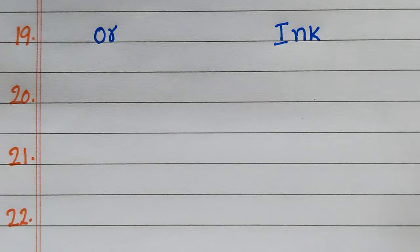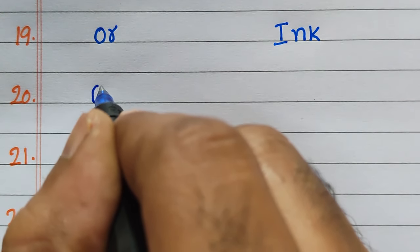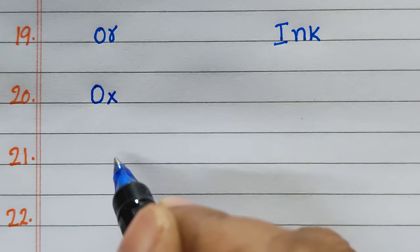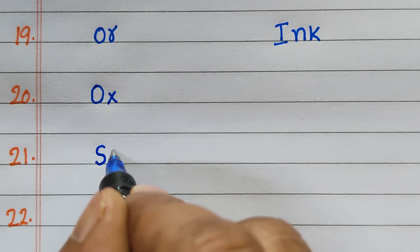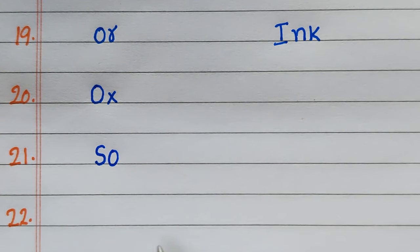Twentieth two-letter word is OX. Twenty-first, SO. Twenty-second, TO.